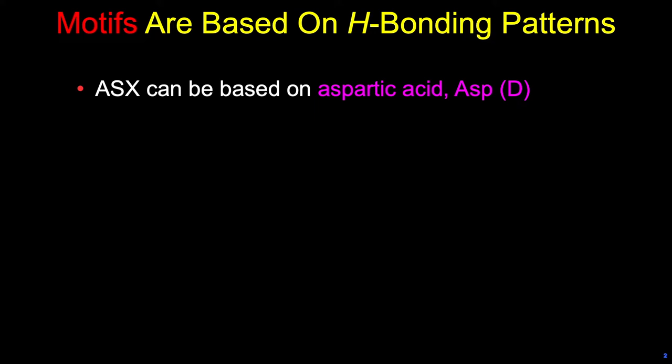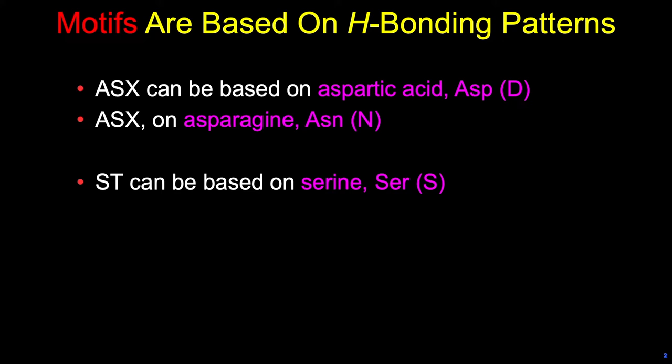Types of ASX and ST turns and motifs. Motifs are based on their hydrogen bonding patterns. They're named after the parent amino acid, which is at a key position. So an ASX turn can be based on aspartic acid (D), or it can be based on asparagine (N). An ST turn can be based on serine or threonine (T).